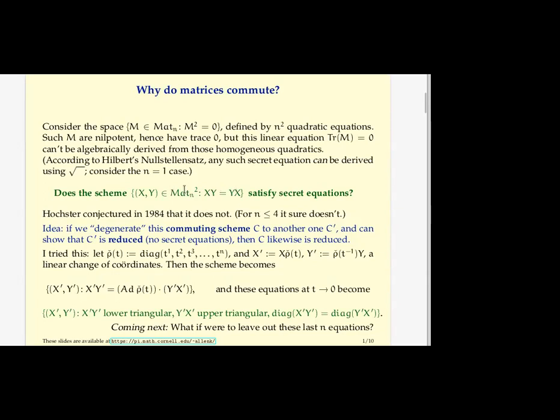Does that ideal, is that ideal radical that's generated by those n² many equations? So if it's not, it means that there's somehow secret equations that are also true on the set of pairs of commuting matrices that hold for any pair of x and y of complex matrices that commute, but that you can't directly derive from those quadratic equations. And that might sound crazy, but let's start with a simpler example.